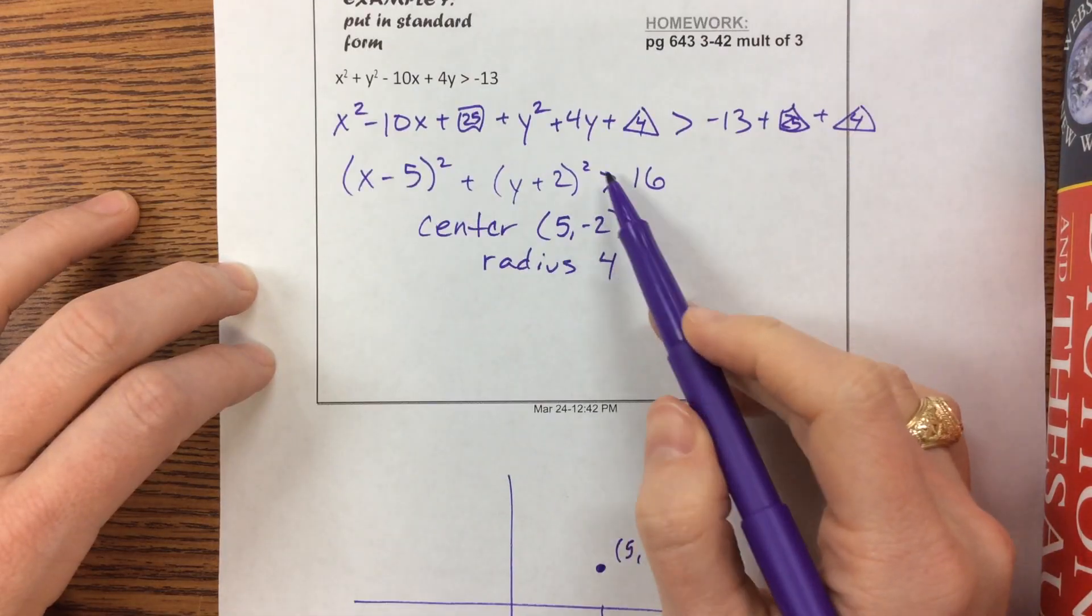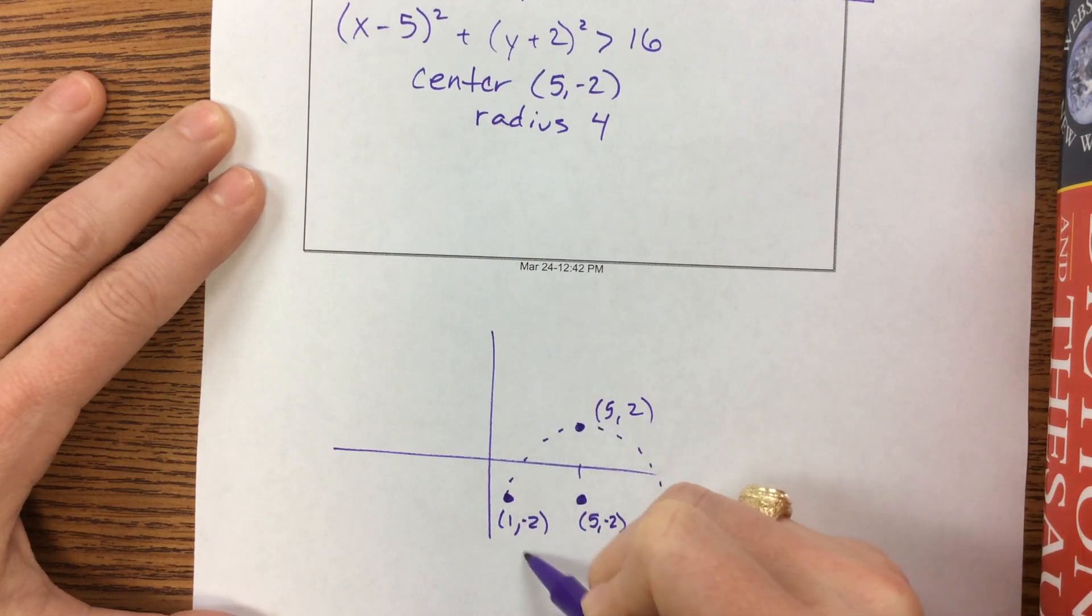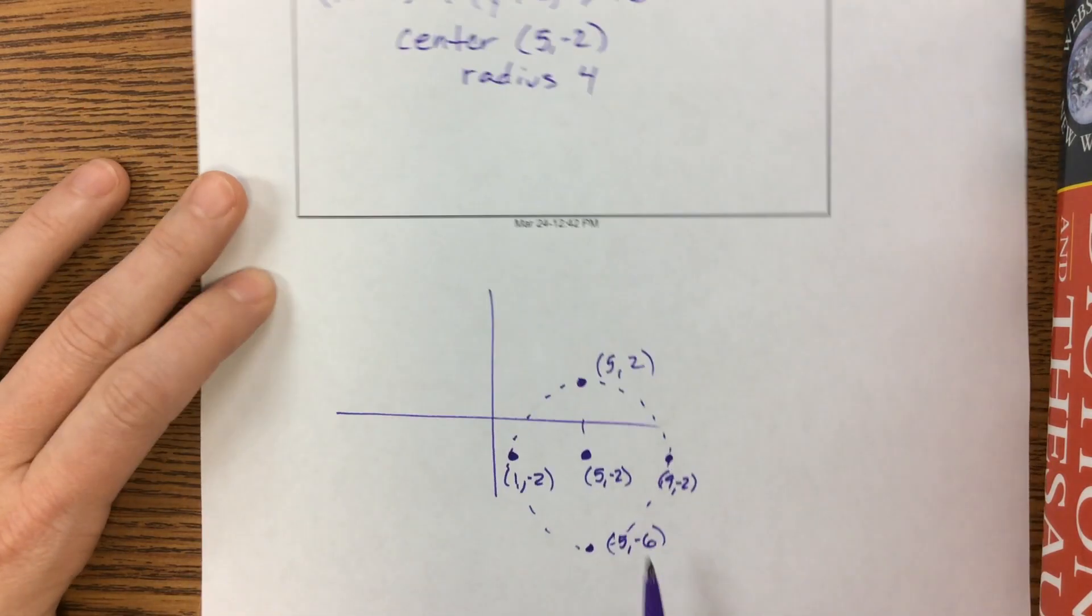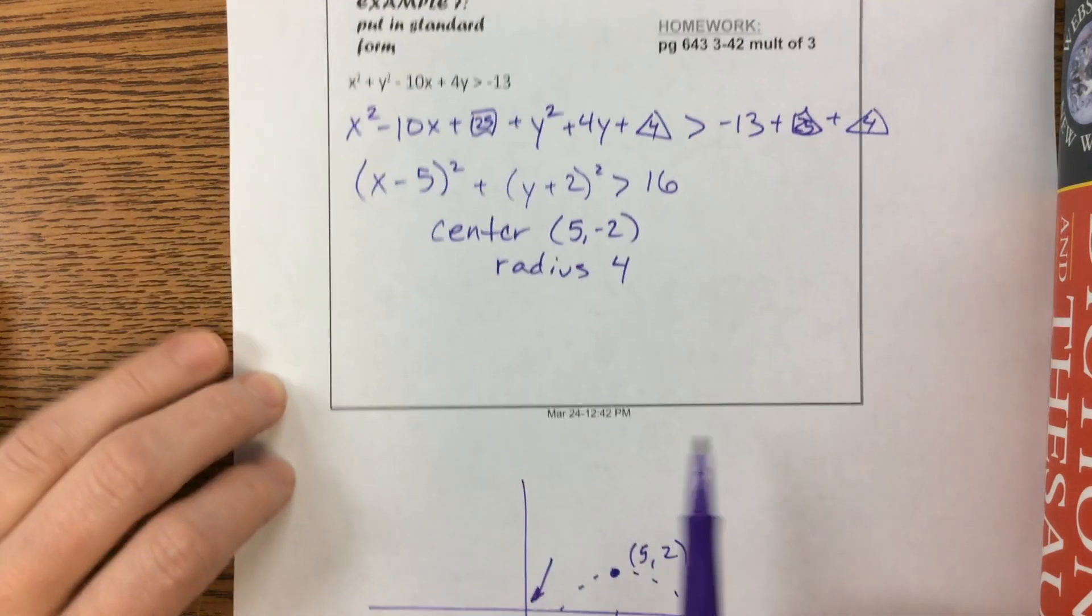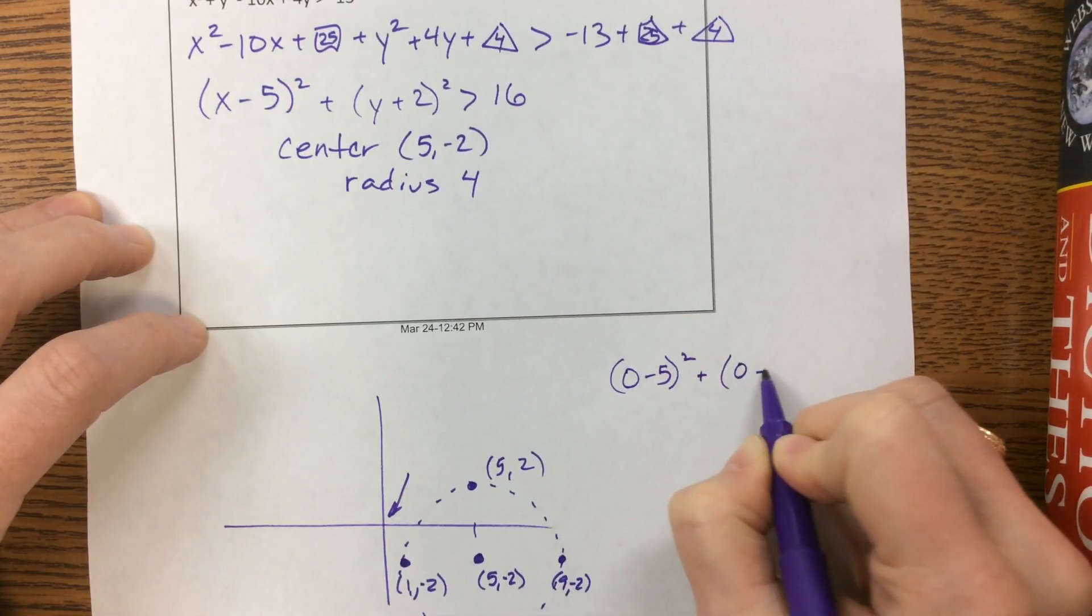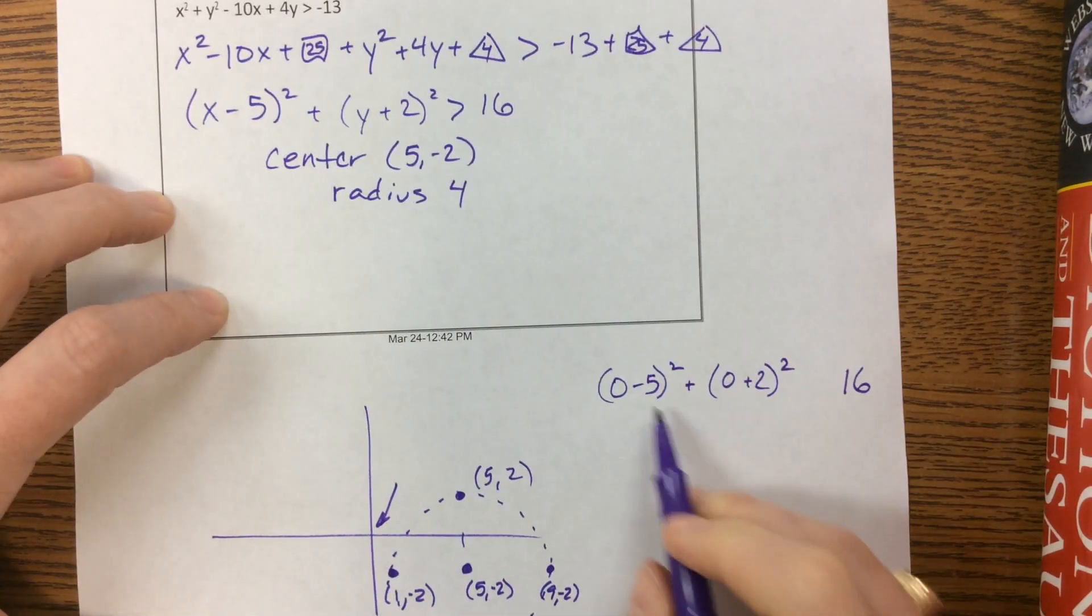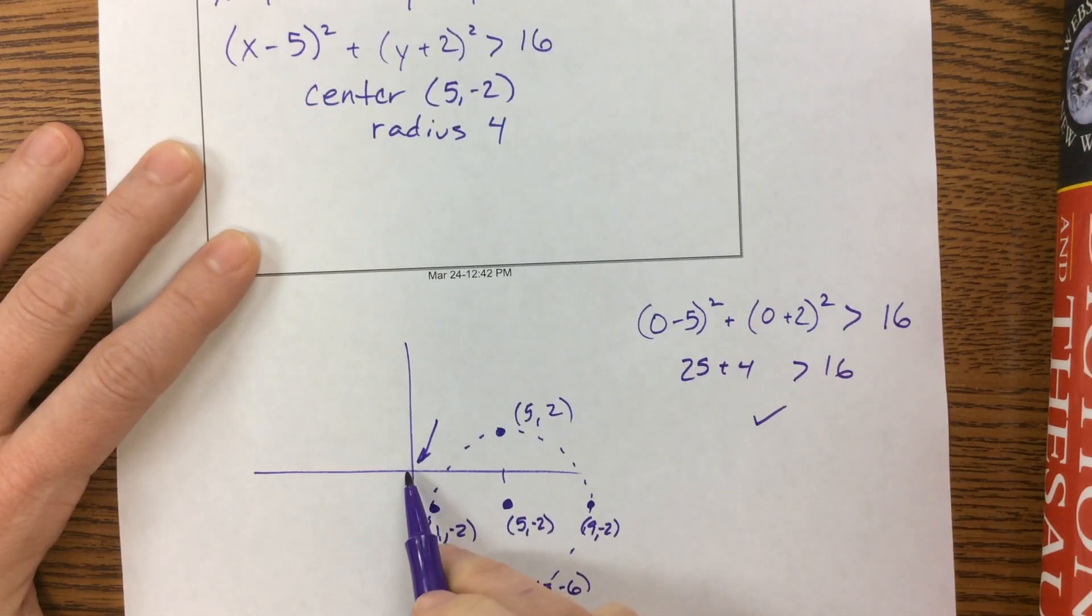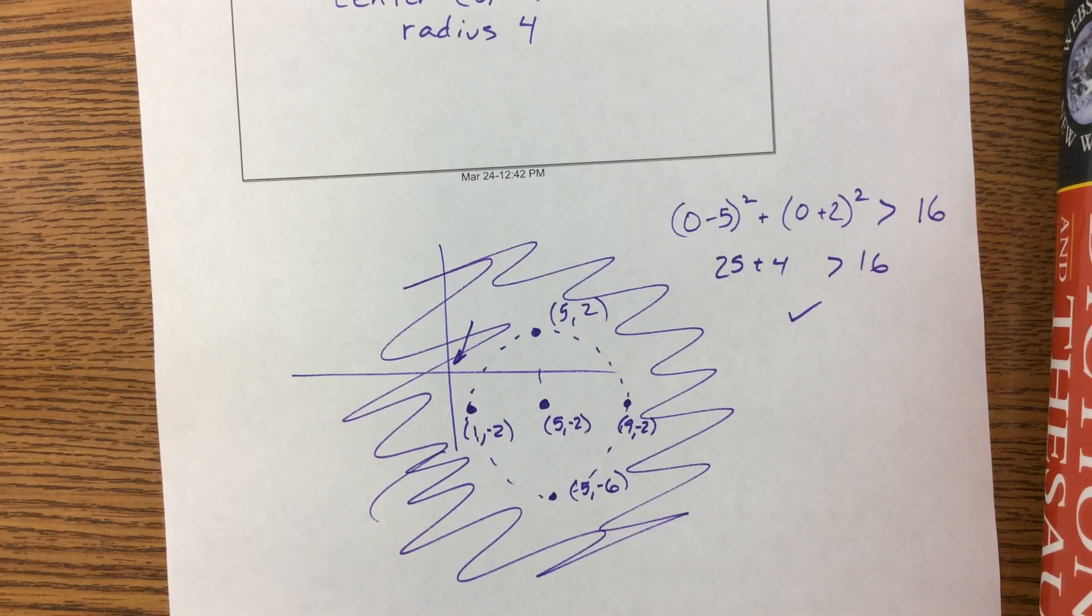This is just a greater than sign, so I'm going to do a dotted line because it does not include those values. I sometimes forget whether to shade inside or outside. What I do is take the origin. If I plug in 0 minus 5 squared plus 0 plus 2 squared, how does that relate to 16? This is 25 plus 4. Is 29 greater than 16? Yes, it is, so I want the origin shaded. It's everything outside. Have fun.